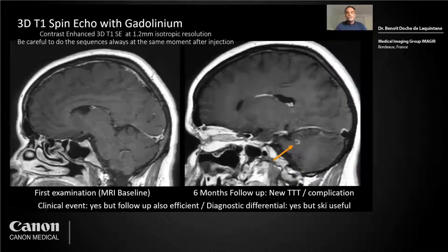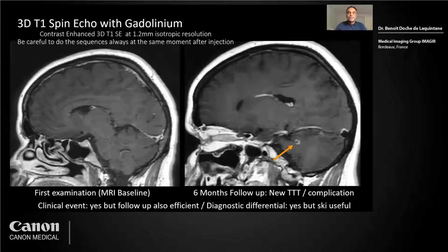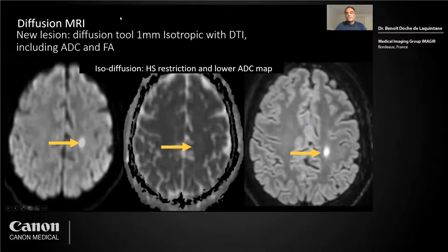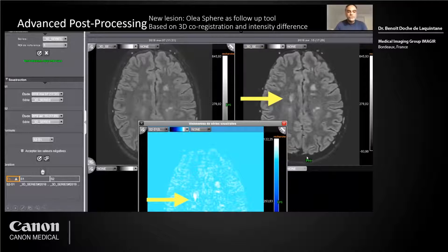For new lesions with gadolinium enhancement — the dissemination in time — I use PINECO isotropic resolution. We need to be careful to do the sequences always at the same moment after injection. I do an injection for the first examination with baseline MRI, for follow-up, at six months, for new treatment, or for a complication. The new lesion can also be seen on diffusion MRI as a restriction with low ADC on the map. For new lesion detection, you can use advanced post-processing with OLEA Sphere, which is based on co-registration and the difference in intensity between old and new lesions.